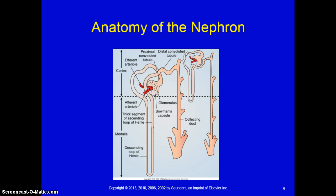There are special cells in the afferent arteriole, efferent arteriole, and the distal convoluted tubule known as juxtaglomerular complexes. These specialized cells produce and store renin. You need to reflect back on the renin-angiotensin-aldosterone cycle — renin is the hormone that helps regulate blood flow, glomerular filtration, and blood pressure.